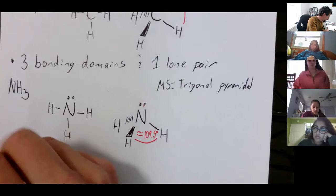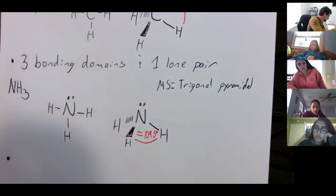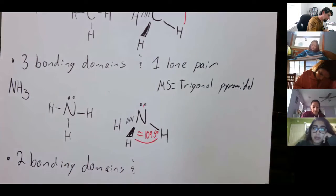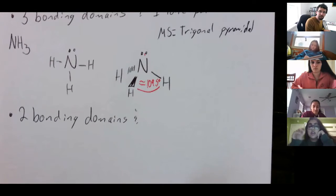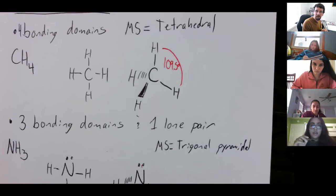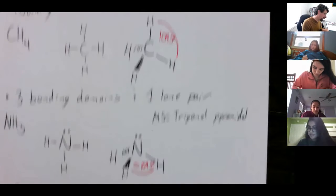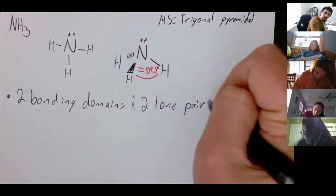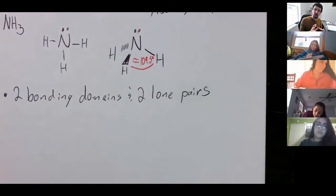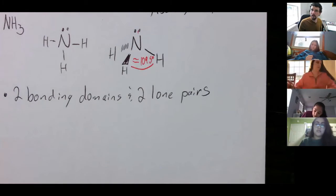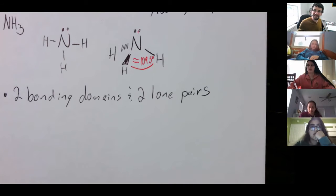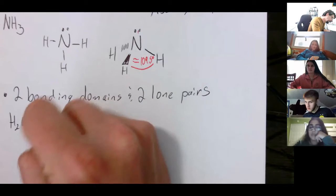Now let's look at two bonding pairs and two lone pairs. Could you think of any molecule that would have this bond topology? Water. You can draw it in two different ways — either the bent form or the linear-looking form. Are either of these Lewis structures wrong? No, they're both correct.